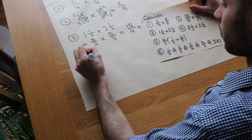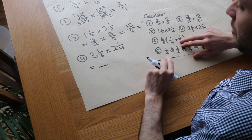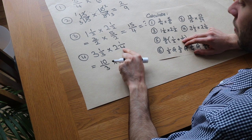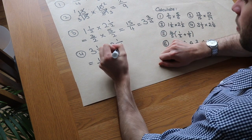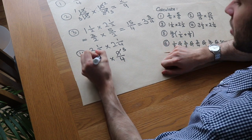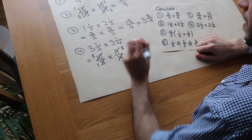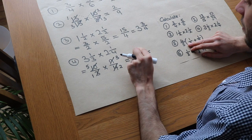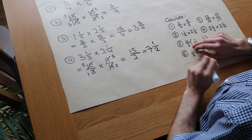For question 4 we have 3 and a third multiplied by 2 and a quarter. Converting: 3 times 3 is 9, plus 1 is 10, giving 10 over 3. And 2 times 4 is 8, plus 1 is 9, giving 9 over 4. We can cross-cancel: 3 and 9 both divide by 3 giving 1 and 3; 10 and 4 both divide by 2 giving 5 and 2. So 5 times 3 is 15 over 1 times 2 is 2, which is 7 and a half as a mixed number.